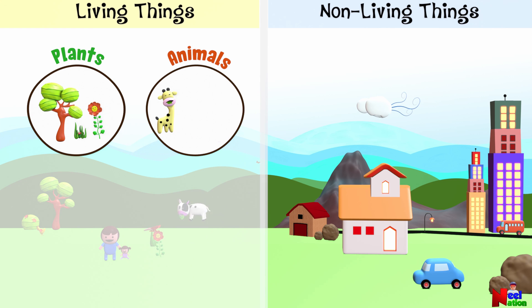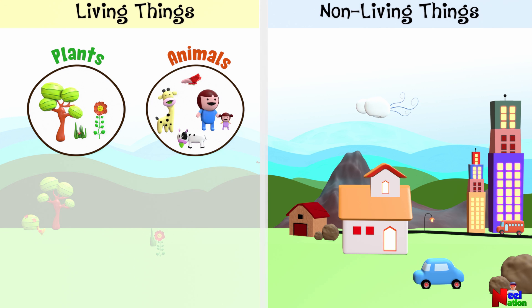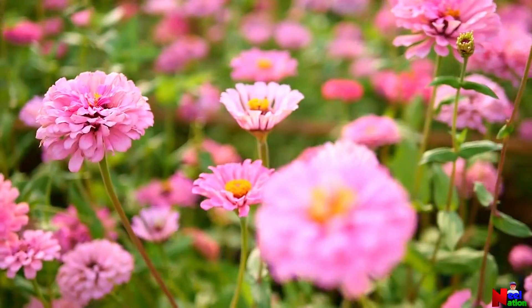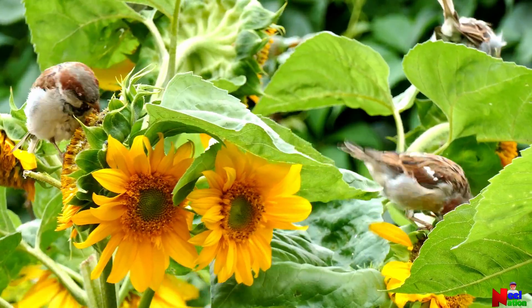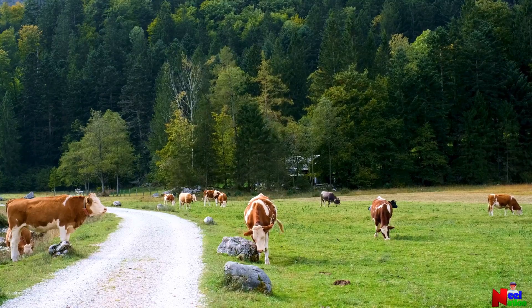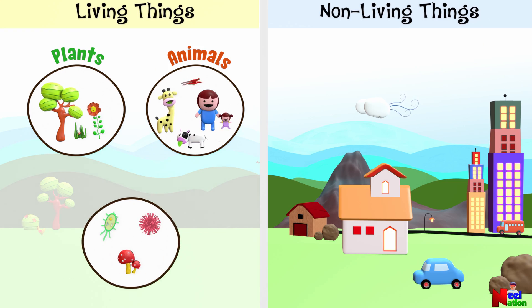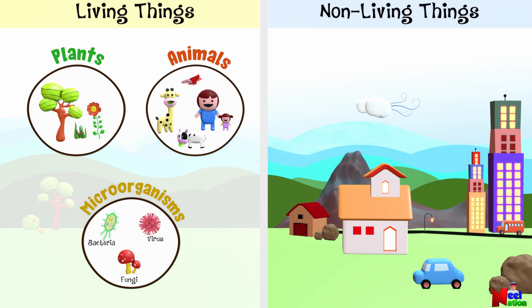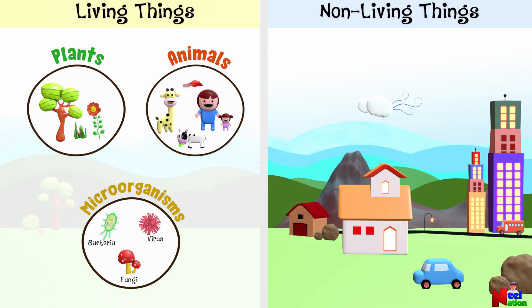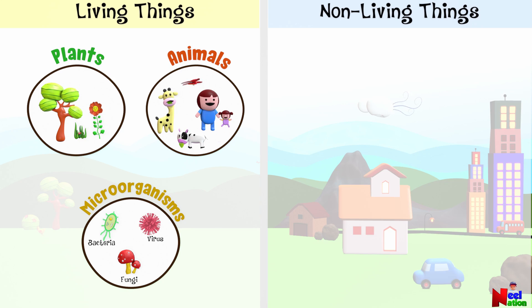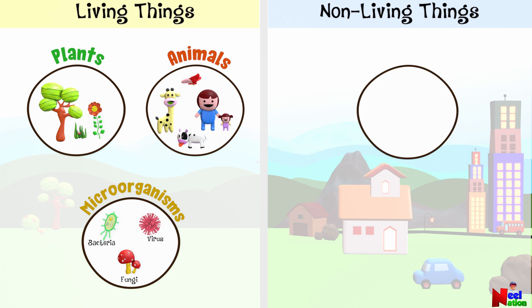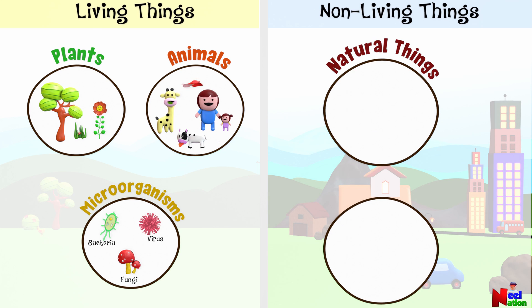All the plants and animals, including people like you and me, are living things. There are other living things like bacteria, viruses, and fungi that are so small they can only be viewed under a microscope. These organisms are called microorganisms.